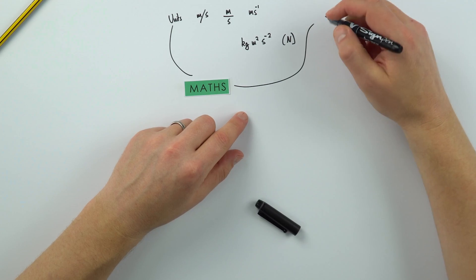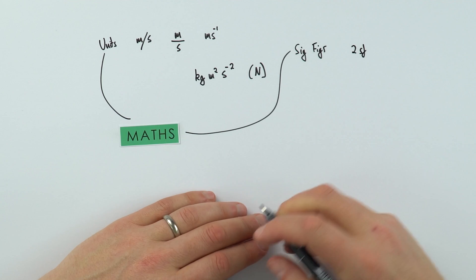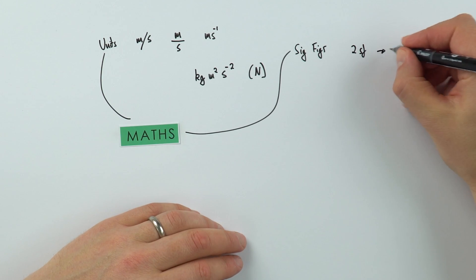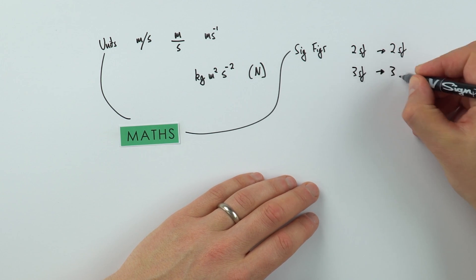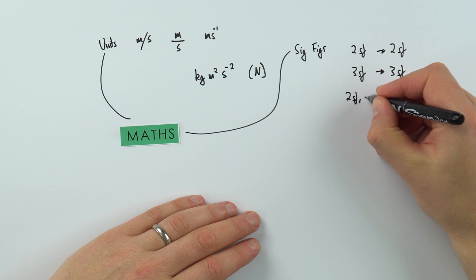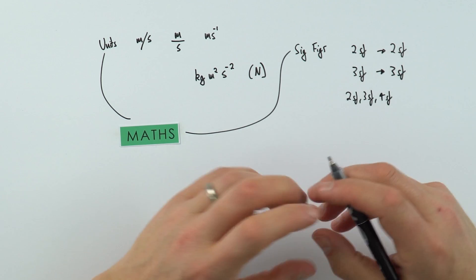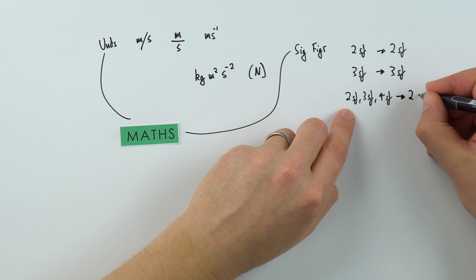Now the other thing we need to think about is when it comes to any questions you might get asked, we need to think about an appropriate number of significant figures. Now this is something that will have been covered at GCSE, but it's really important at A-level. If, for example, you have a question where the raw data is given to two significant figures, then you can really justify giving your final answer also to two significant figures. If the raw data is given to three significant figures, then your final answer should be given to three significant figures. But if you have raw data with a mix of maybe two significant figures, three significant figures, and also four significant figures, you can only justifiably give your final answer to the least amount of significant figures, which in this case would be 2SF.